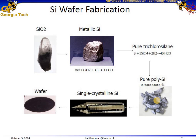The steps involved in the production of silicon from sand. This image outlines the process of converting raw silicon dioxide into high-purity single-crystalline silicon wafers used in semiconductors.